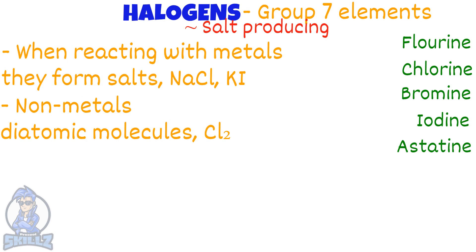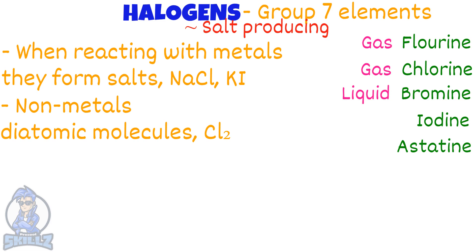Now let's look at the physical state of the elements at room temperature. Fluorine is a gas, chlorine is a gas too, bromine is a liquid, while iodine and astatine are solids.